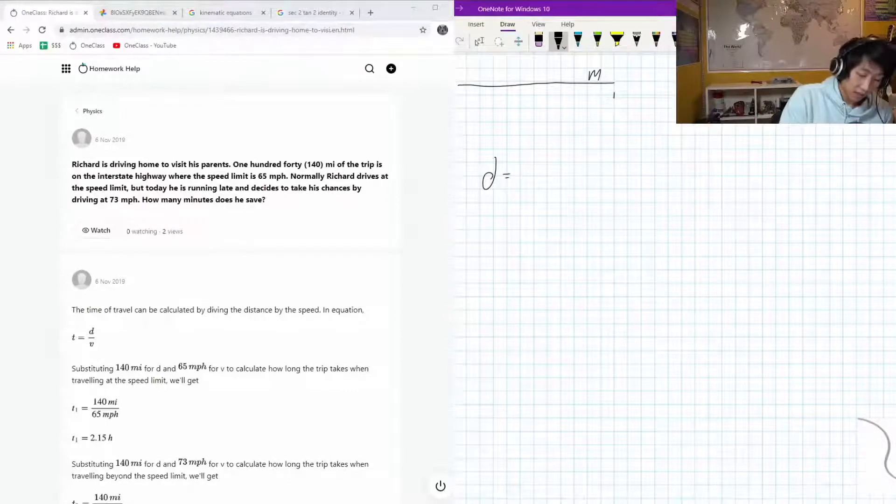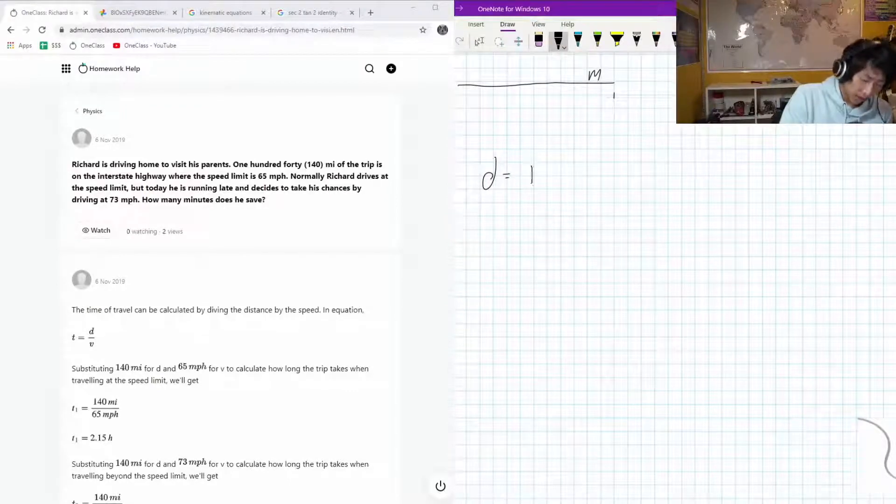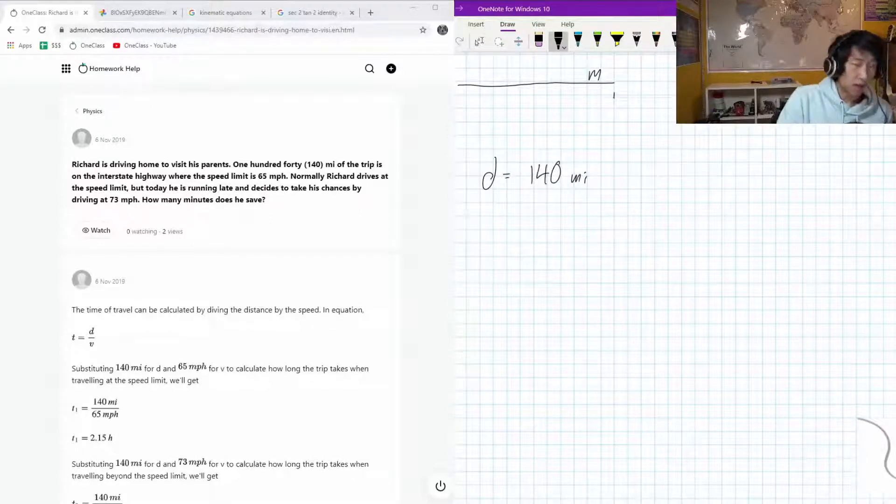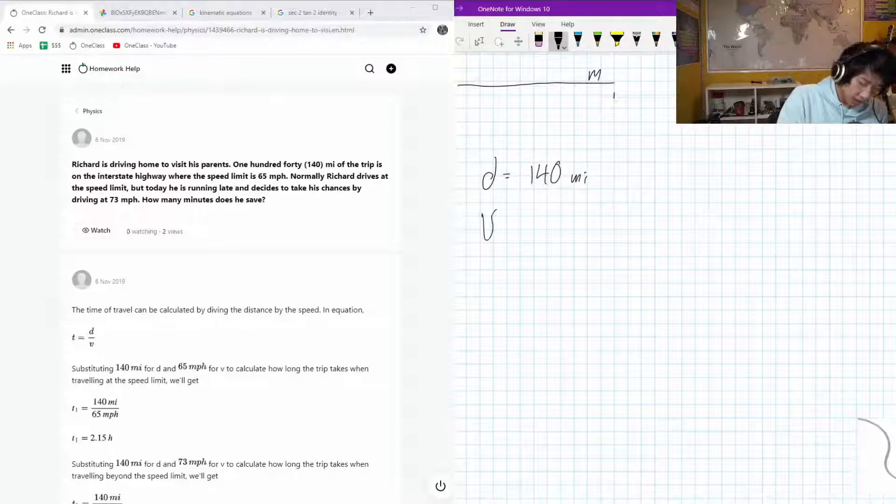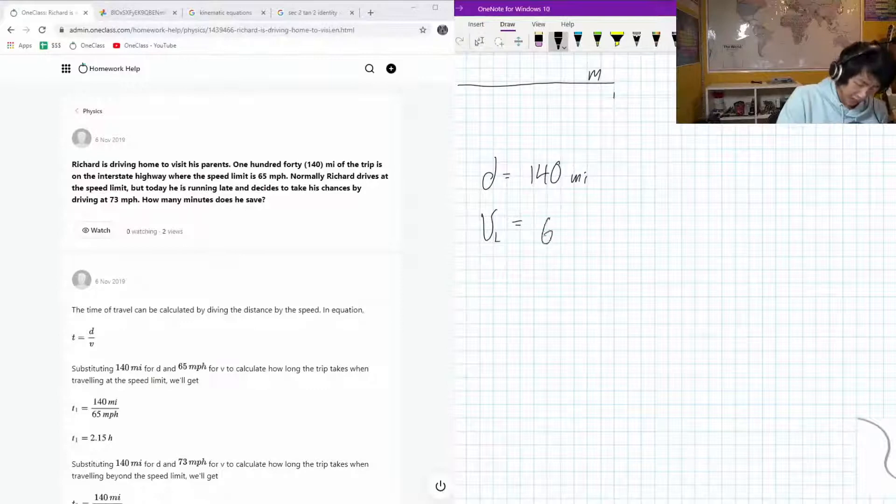So the first thing that we need to do is identify our information of interest. Our distance is 140 miles, and our speed limit, let's call that V_L for limit, is going to be 65 miles per hour.